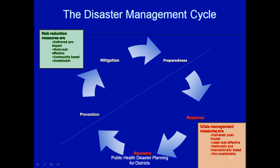Crisis management is not cost-effective at all. It is national and international based, and it is not sustainable. But when it comes to preparation, mitigation, and prevention, it is community-based and it is sustainable. That's why the Hyogo Framework for Action outlines that we should base on community, because disasters are local and happen at the community level. This aspect of disaster management is sustainable.